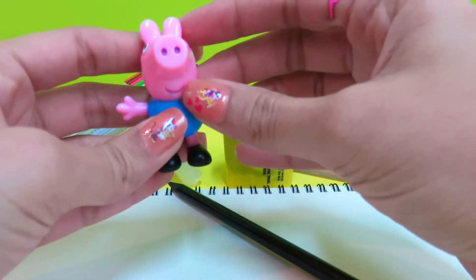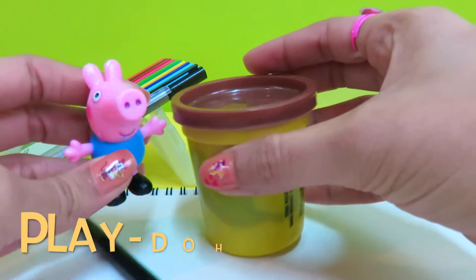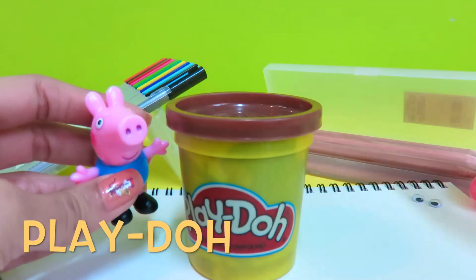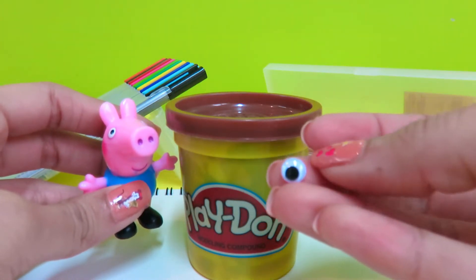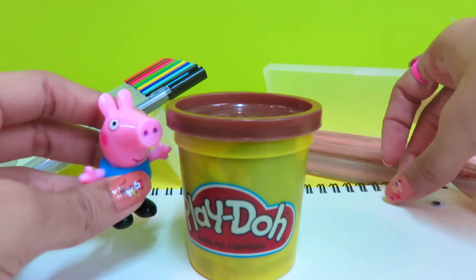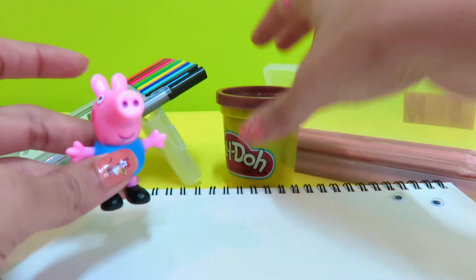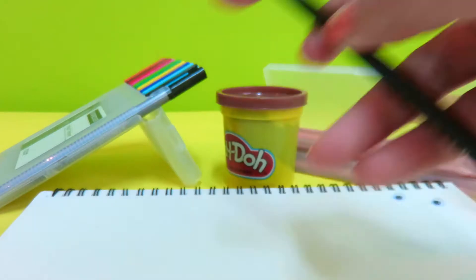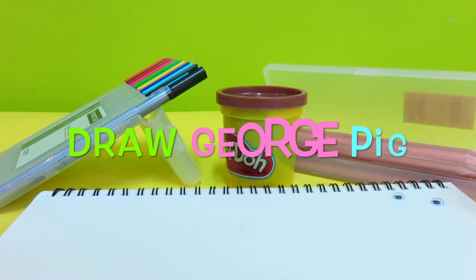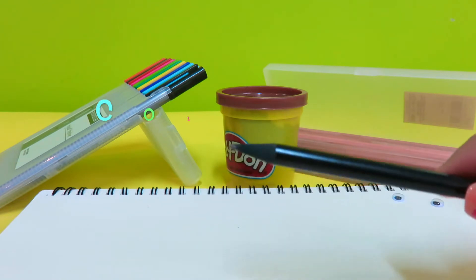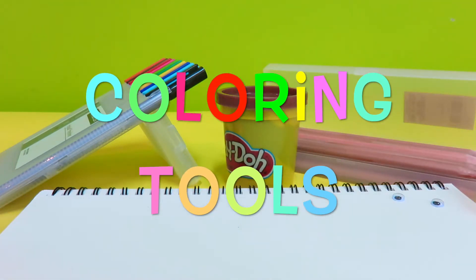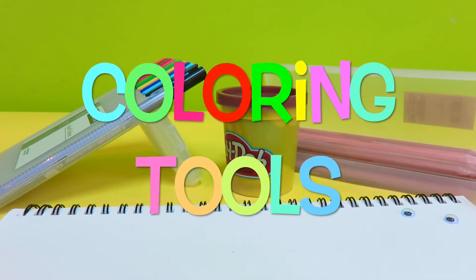Now, with him we have some Play-Doh and we have these little eyes. What do you think we're going to do today? Yes, if you're smart you know. We're going to draw George. So get your papers, your pencils and all your coloring tools. Are you ready? Then let's begin.